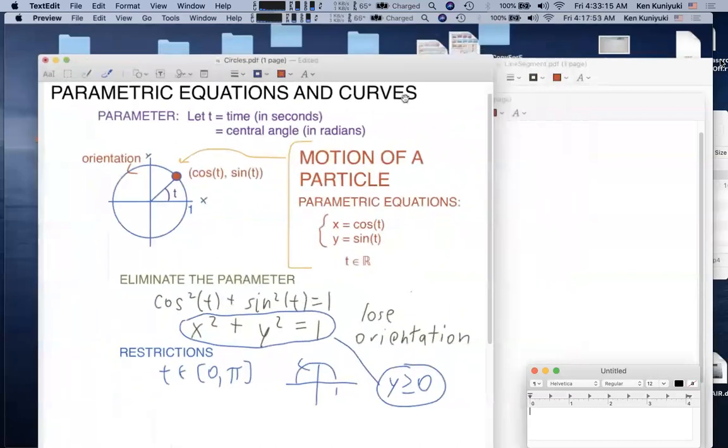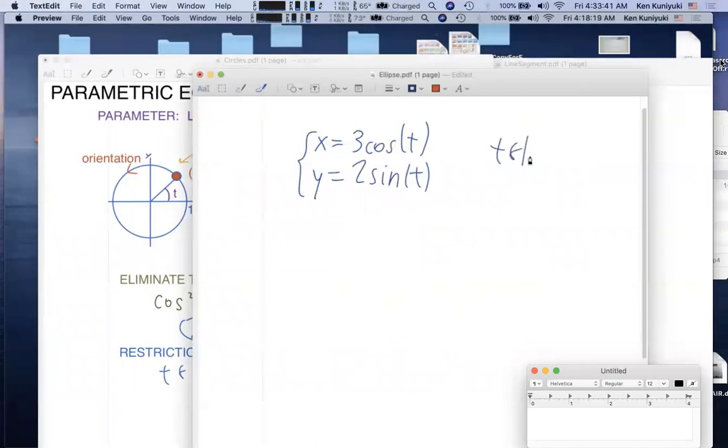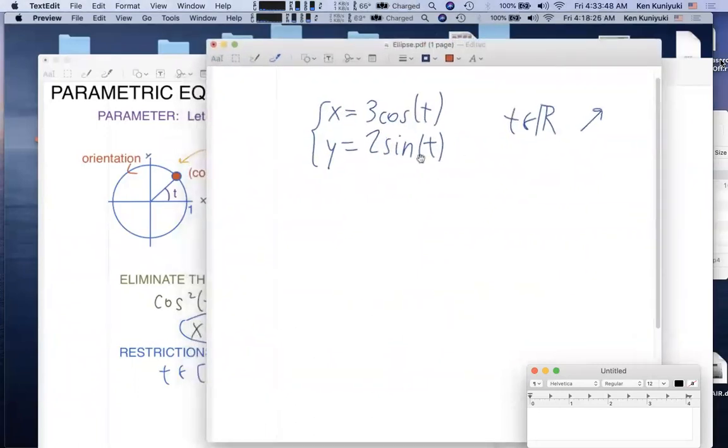Now, instead of these, let's say that we have the following parametric equations. How about x equals 3 cosine of t and y equals 2 sine of t? Again, we allow t to vary over all reals. Presumably, t is increasing in value. Time progresses.